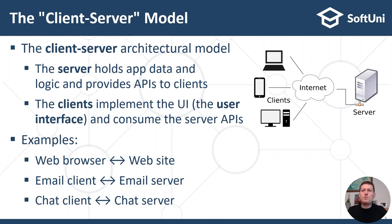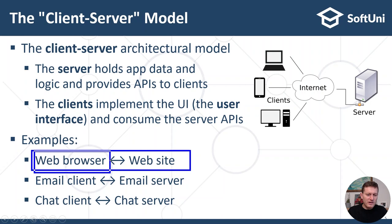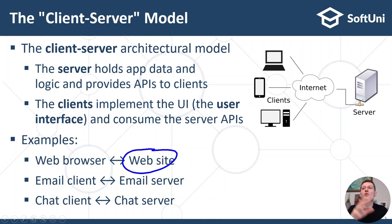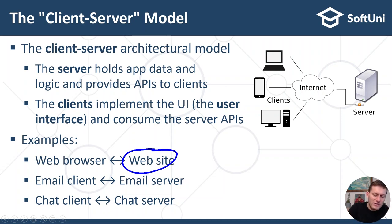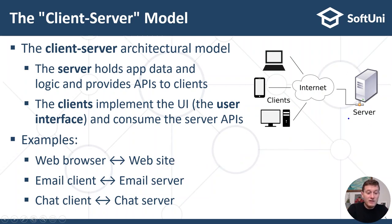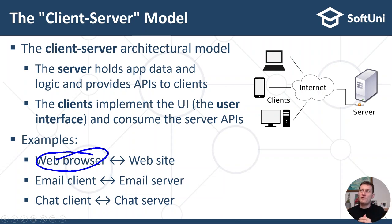The first example is when a web browser opens a website. We have a web browser and a web server which provides this website. The web browser is the client software. The web server holding the website is the server software. The data is stored at the server side — it is the website itself. The user interface is at the client side and it is rendered by the web page from the website.